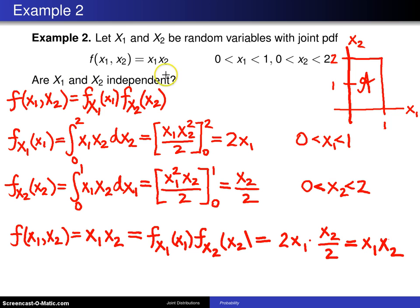So it is the case that the joint equals the product of the marginals. The answer to the question, are x1 and x2 independent, is yes. Those are independent random variables.